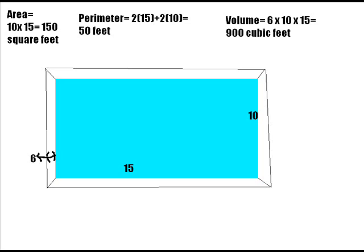Using our past formulas, area would be 15 feet times 10 feet, which equals 150 square feet for the pool. The perimeter would be 2 times 15 feet, plus 2 times 10 feet, which equals 50 feet. And the volume is 15 feet times 10 feet times 6 feet, which equals 900 cubic feet.